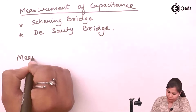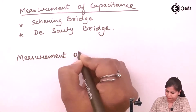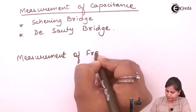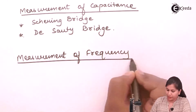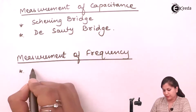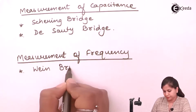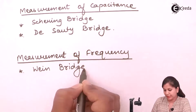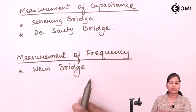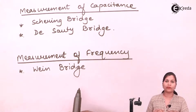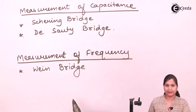For the measurement of frequency, we have the most famous Wien bridge. It is invented by the scientist Wien and is used for the measurement of frequency. Frequency will be measured in terms of inductance and capacitance.